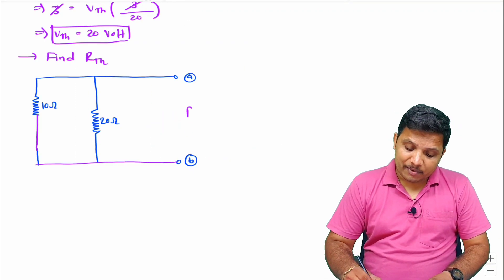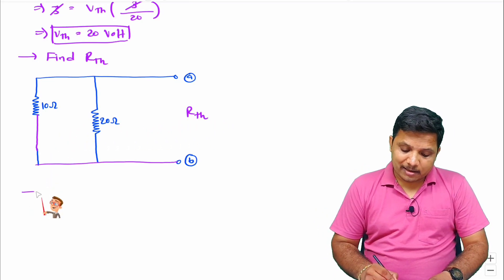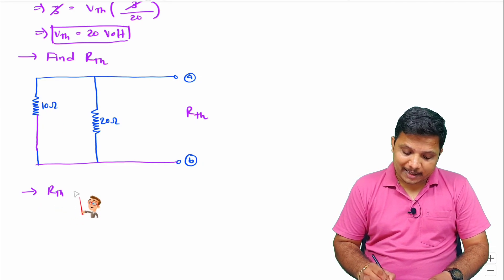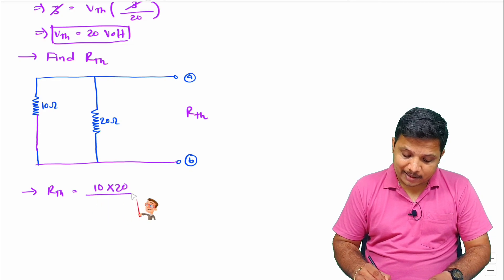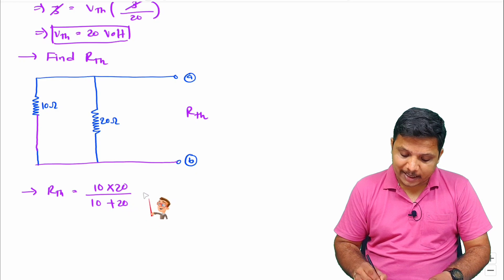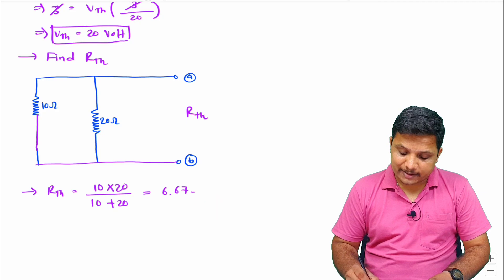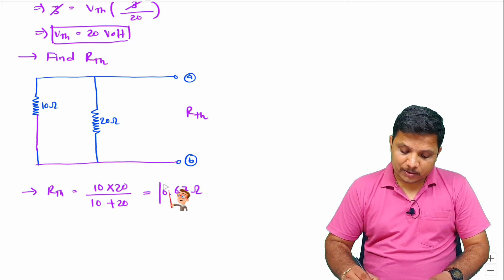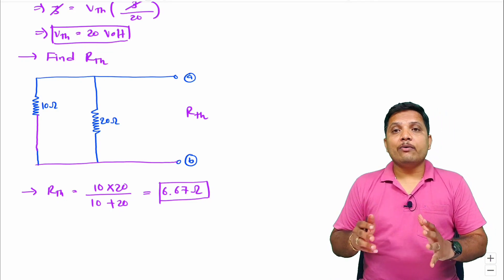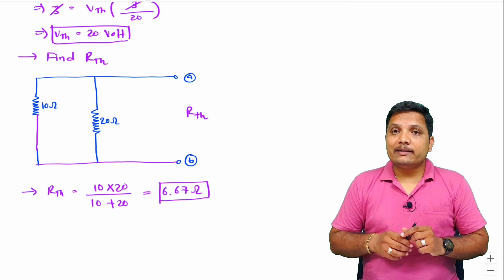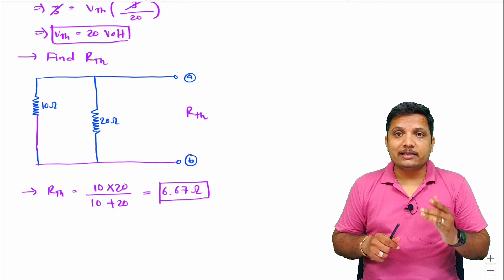Now here we will be having RTH at load and simply we can have RTH as per this parallel combination. So I can say RTH is 10 parallel 20, that is 10 into 20 divided by 10 plus 20. So that is 200 by 30, so that has to be 6.67 ohm. So now I have RTH as well as VTH. So I can have Thevenin's equivalent circuit as per series connection of VTH and RTH.